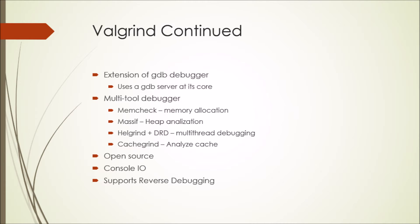Valgrind has a lot in common with GDB. It has the same four principles and has a GDB server at its core, meaning that whenever you do something in Valgrind, it's actually being passed through GDB. What makes Valgrind different is that it's a multi-tool debugger — it uses multiple different tools. For instance, there's a tool called MemCheck, which handles memory allocation errors; one called Massif, which analyzes the heap; Helgrind and DRD, which handle multi-thread debugging; and Cachegrind, which analyzes for cache errors. Because Valgrind is open source, most of these tools are made by the community, and it is also expanding because of this.